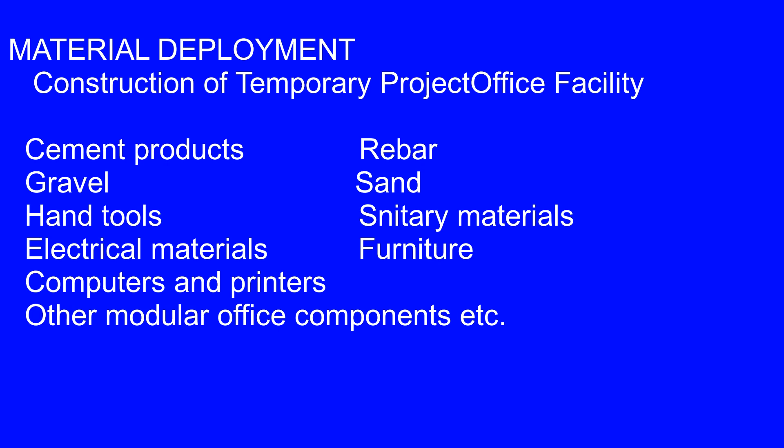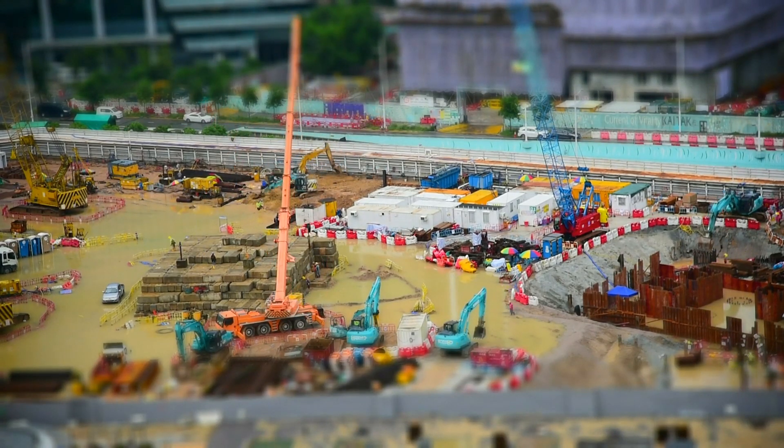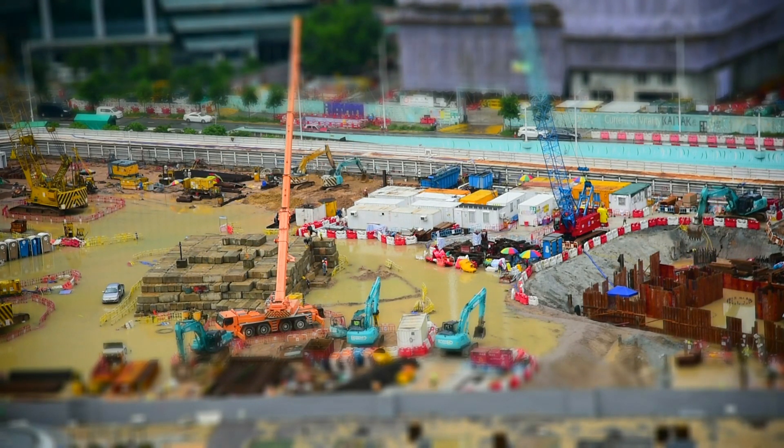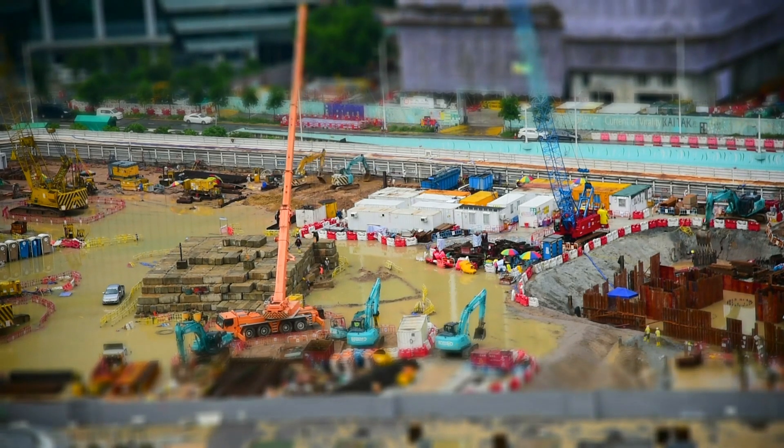For material deployment, you need materials for construction of temporary project facilities such as cement products, reinforcement bar, gravel, sand, hand tools, sanitary materials, electrical materials, furniture, computers, printers, and other modular office components. After completing the storage and handling area, you may also need to mobilize materials required for actual project execution, especially bulk materials, rebar, scaffolding, and so on.